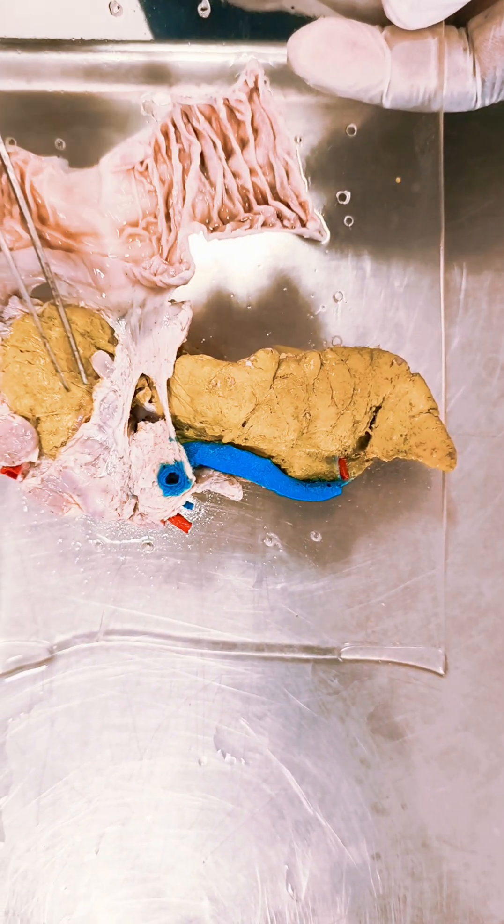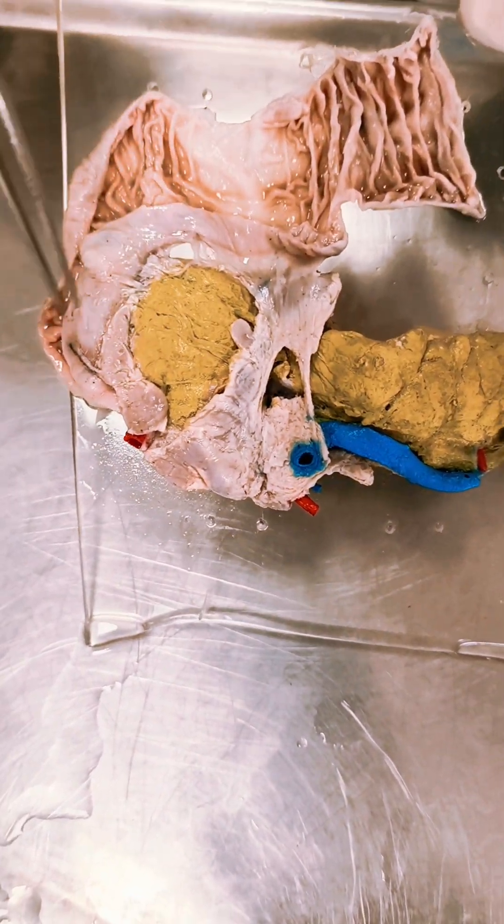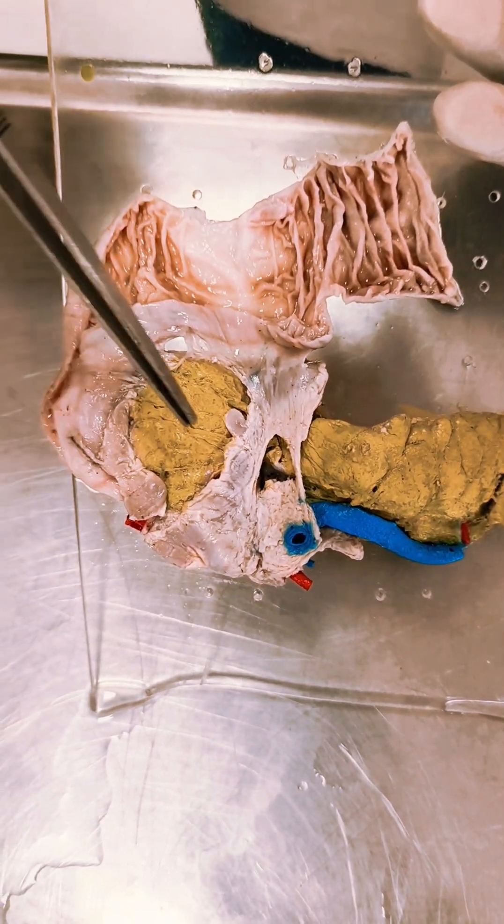This specimen shows the structure and anatomy of the pancreas. This is the interior dissection of the duodenum.